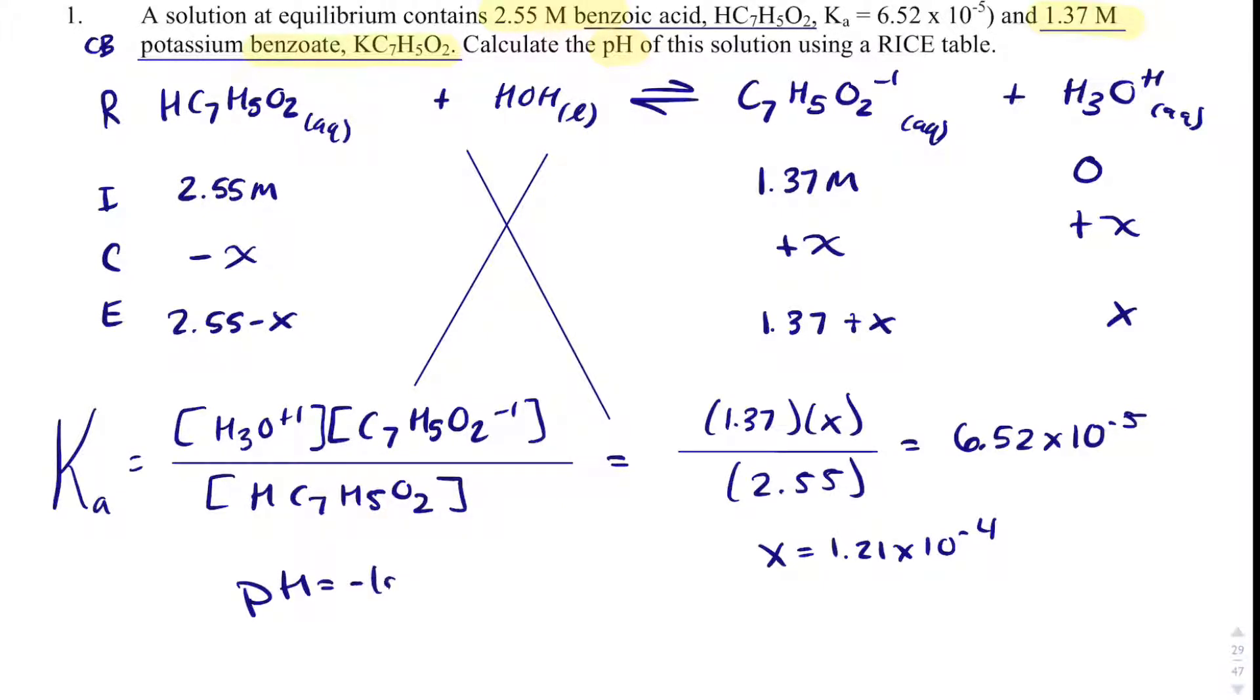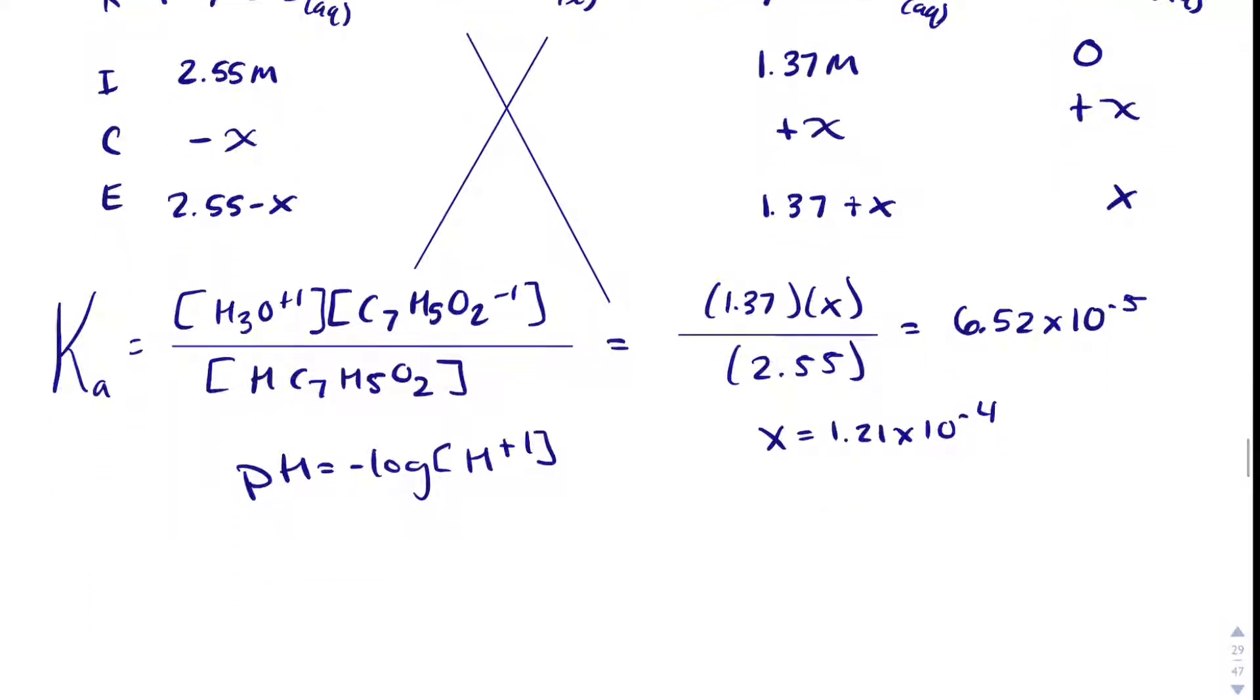So now what we have is 1.37 times x divided by 2.55, and that equals 6.52 times 10 to the minus 5. And if I do a little bit of math here, I will get x to be 1.21 times 10 to the minus 4. pH is equal to negative log the concentration of H plus. So pH equals negative log 1.21 times 10 to the minus 4. When I take the negative log of this, I expect it to be a little bit less than 4 because the exponent was 4. And in fact, I get 3.92.